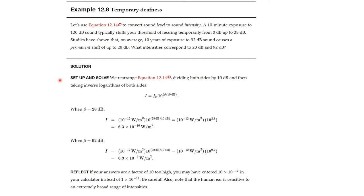So, we're going to set this up and solve it by looking at the definition. We're going to look at our previous equation. We're going to divide both sides by 10 dB. And then take the inverse logarithms of both sides to get that i is equal to i0 times 10 to the beta divided by 10 dB. So, when beta is 28, we put 28 in here for beta. And i0 is 10 to the minus 12 watts per square meter. So, we plug this into a calculator and we get that this is 6.3 times 10 to the minus 10 watts per square meter.